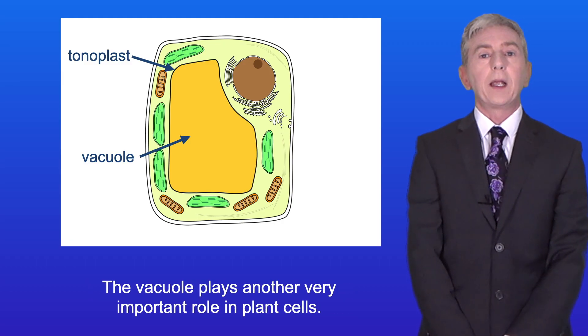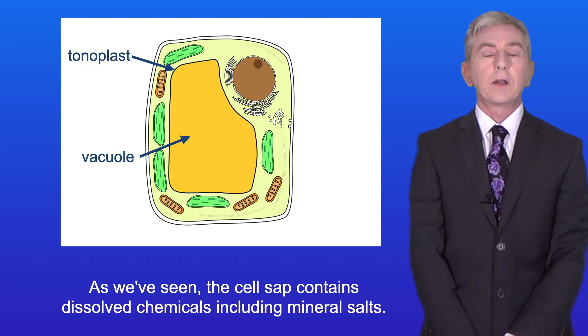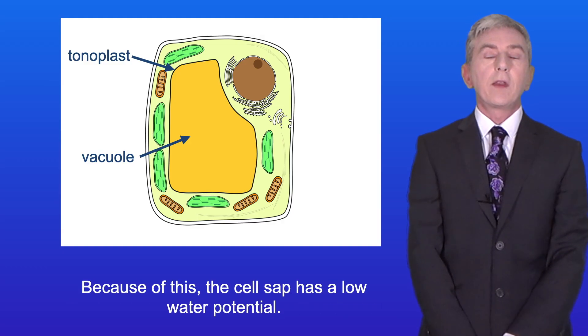Now the vacuole plays another very important role in plant cells. As we've seen the cell sap contains dissolved chemicals, including mineral salts. And because of this the cell sap has a low water potential.